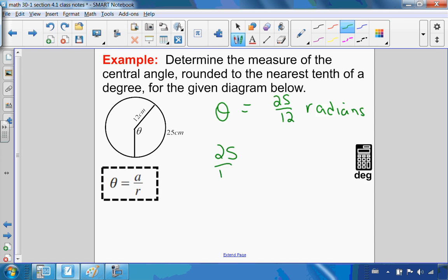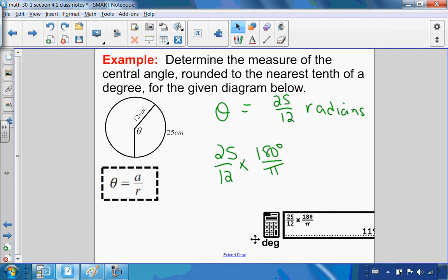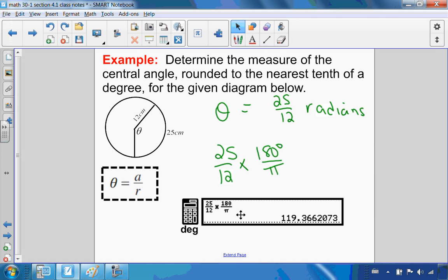I'm going to take my radians, since I want to go to degrees, I'm going to put the 180 on top, because the degrees go on top. Then I just plug it into my calculator: 25 over 12 times 180 over π, and to the nearest tenth of a degree, I have 119.4 degrees.